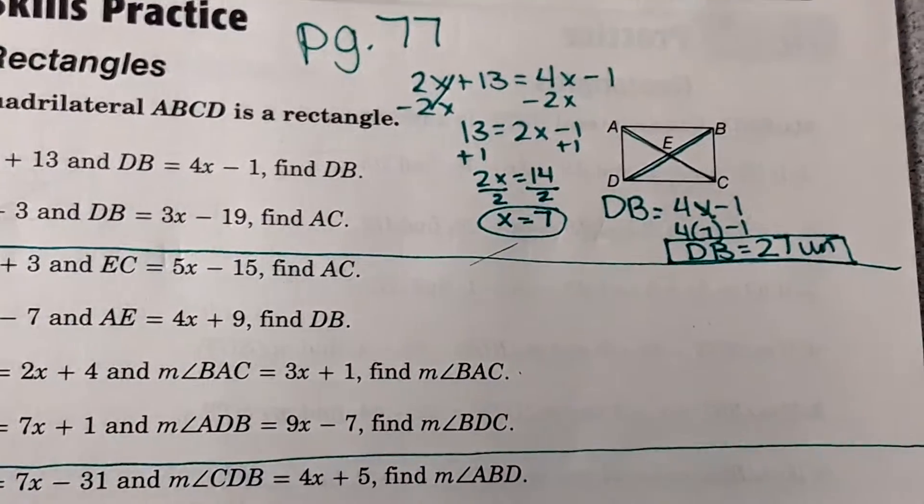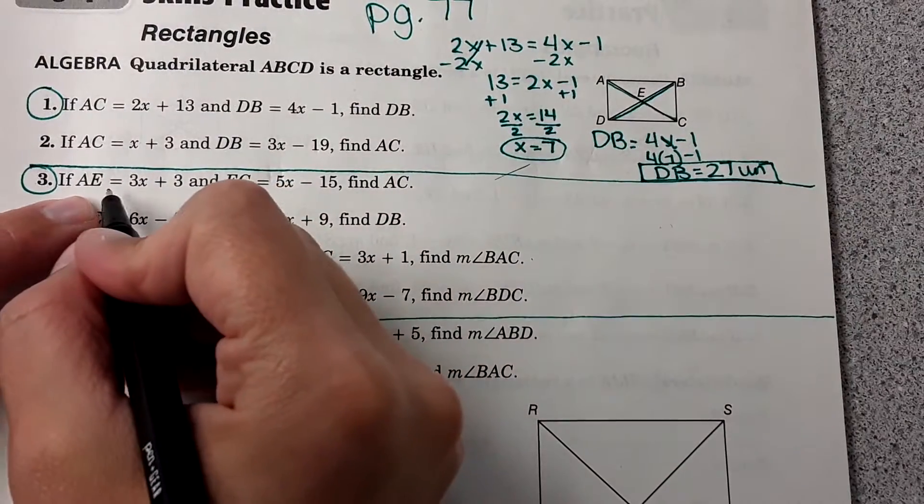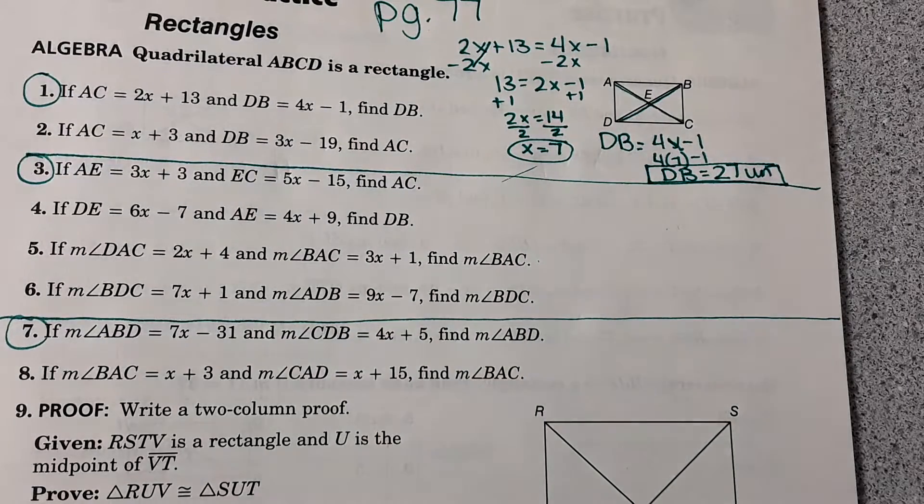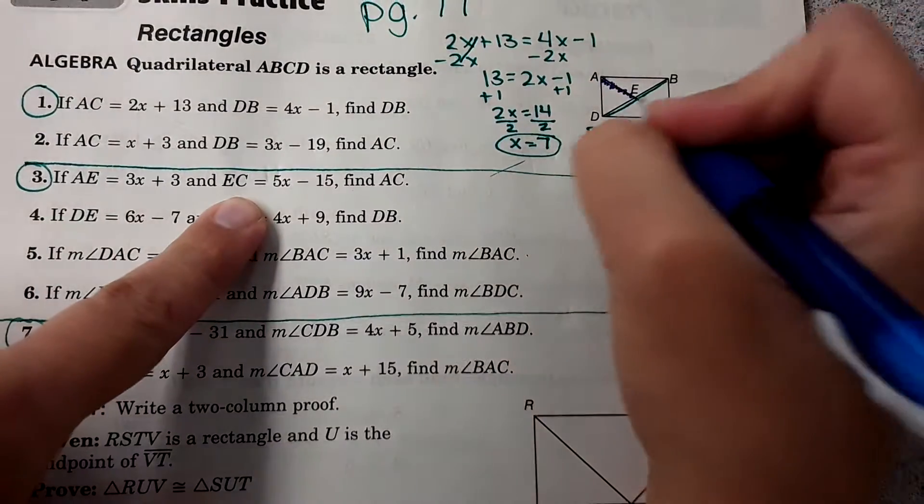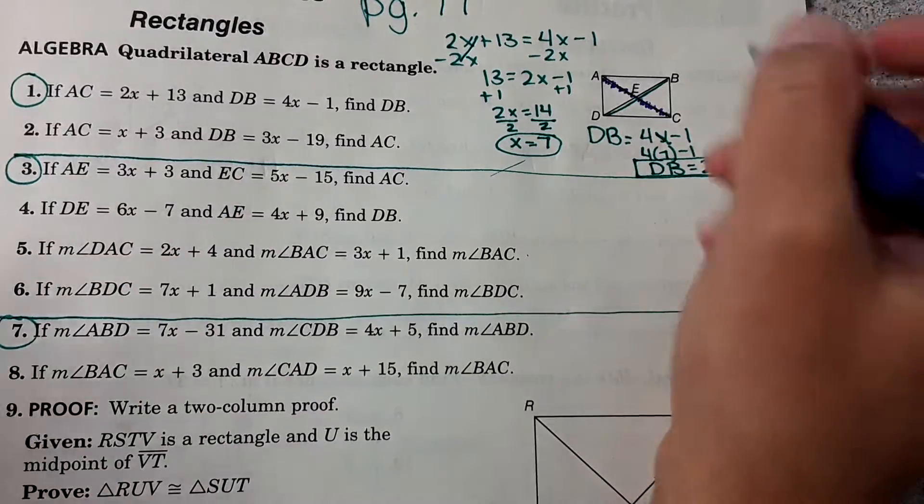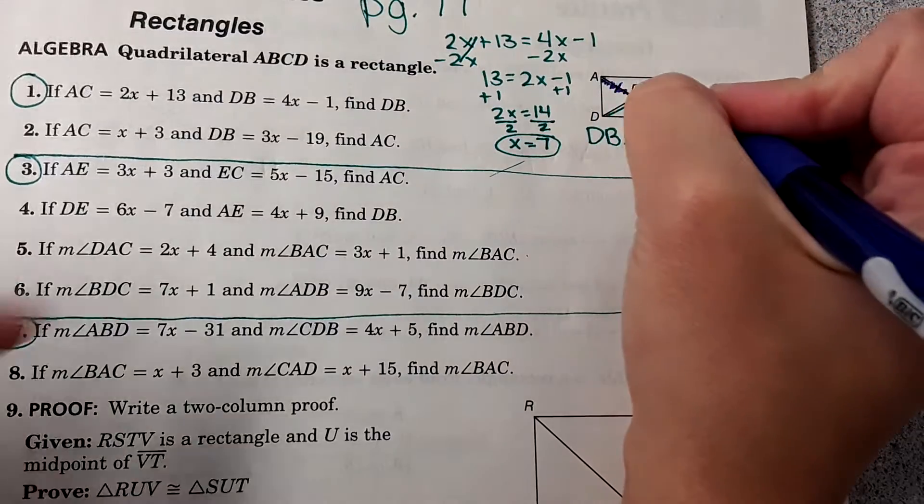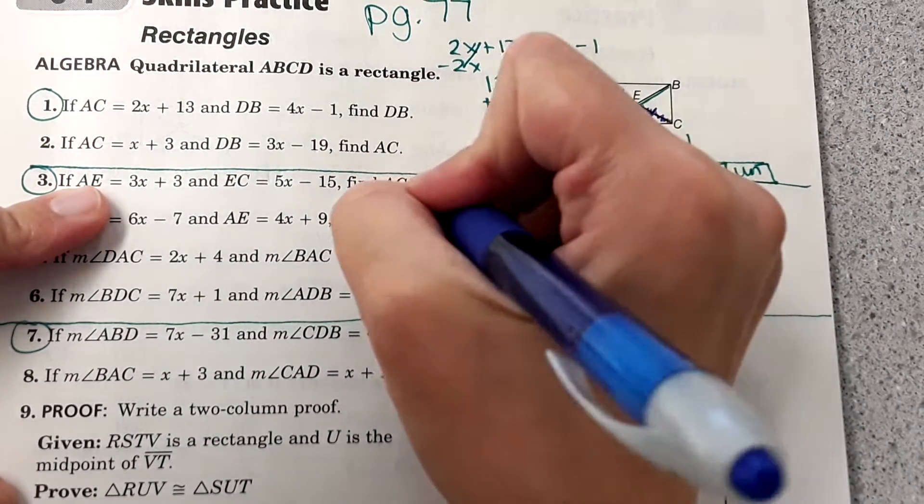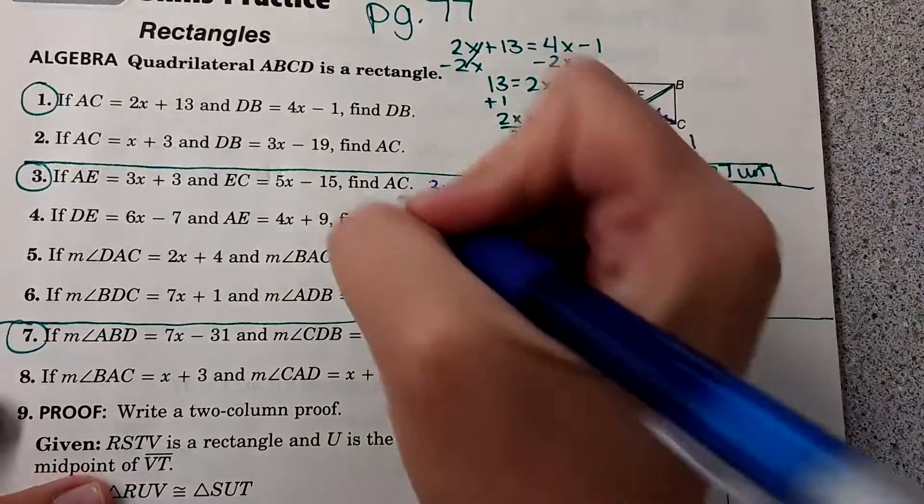Okay, so now we're going to move down to number 3. Number 3 says that segment AE is 3x plus 3, so that's, let me use a different color here. So that's this segment right here. And then segment EC is 5x minus 15. Because it is a parallelogram, these diagonals do bisect each other, so this length is the same as this length. And we can again set the expressions equal. So I'll do 3x plus 3 equals 5x minus 15, and then solve for x again.